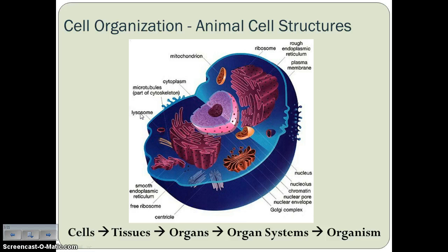Lysosomes are responsible for breaking down and digesting waste materials — they have those digestive enzymes. The mitochondria is another organelle that's really important in the animal cell. Because animal cells don't have chloroplasts, they can't photosynthesize or capture energy from the sun. So they have to produce a lot of energy, and the mitochondria does the opposite of photosynthesis — it breaks down food in order to produce energy.